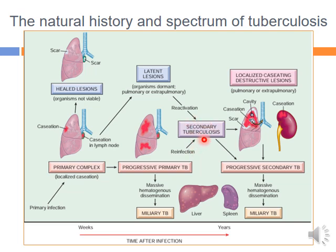In secondary tuberculosis, the main affected site is the upper part of the lungs — the apices. Because the person has immunity against TB bacilli, there will be formation of an active granuloma. There will be much damage to the apices of the lung with formation of multiple granulomas and cavities. Sometimes this destruction is associated with damage to blood vessels, allowing microorganisms to enter the bloodstream and spread, producing miliary tuberculosis.